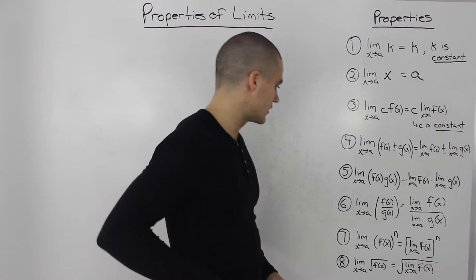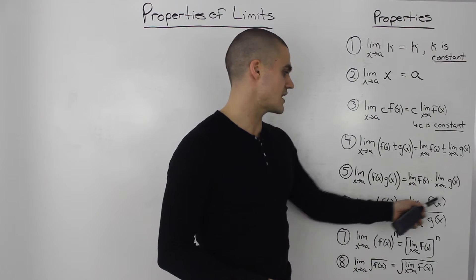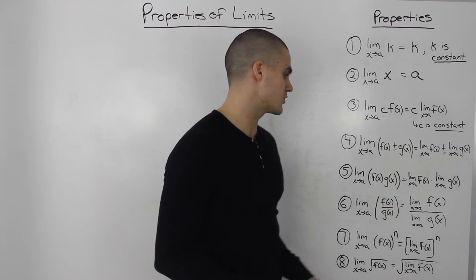The sixth property, the limit as x approaches a of f of x divided by g of x. Take each limit separately and then just divide your results.